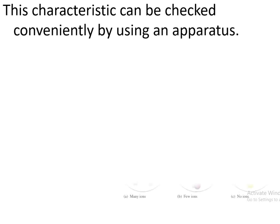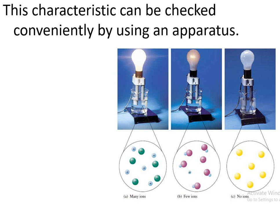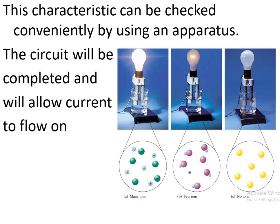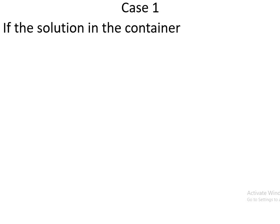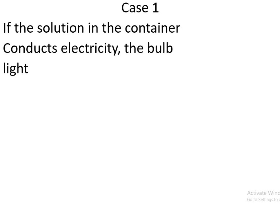This characteristic can be checked conveniently by using an apparatus. The apparatus consists of a circuit which is completed by the solution contained in the beaker, and a bulb connected to that circuit. The circuit will be completed and will allow current to flow only when there are charge carriers or ions in the solution. The bulb will glow only when the circuit is completed by a solution in which charge carriers or ions are present.